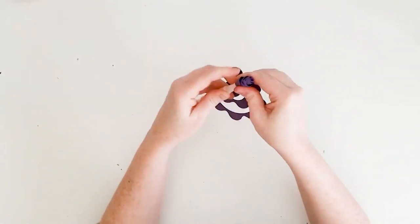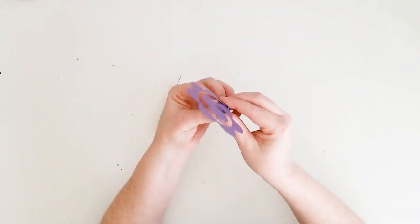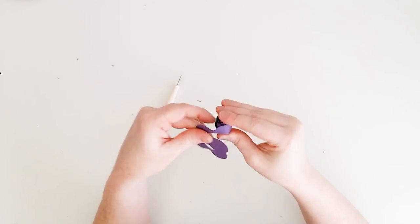Keep rolling until you get to almost the end. You'll want to stop rolling before you get to the circle that's at the end.